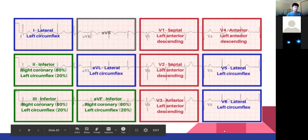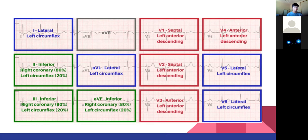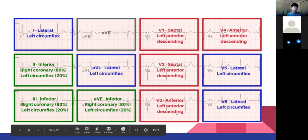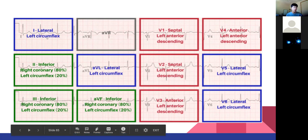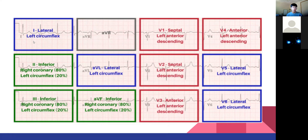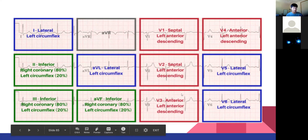This diagram is very useful for STEMIs and NSTEMIs, lining up which lead we're looking at and what artery it might affect. For example, ST elevation in lead 1, AVL, V5, and V6 would indicate a lateral AMI, probably an occlusion of the left circumflex. This is a diagram worth committing to memory.